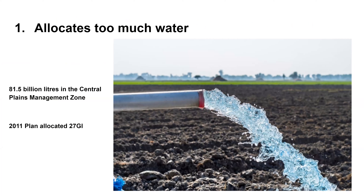The Water Act in the Northern Territory is extremely weak — it's highly discretionary and lacks clear direction on how we can sustainably manage water. 'Estimated sustainable yield' is not defined, so it doesn't have to meet certain parameters. In this region, 81.5 billion litres of water is being allocated. The Singleton licence is one of the largest in Australia, and about half that volume — 40 gigalitres — will go to Singleton. That 40 gigalitres equals the drinking water supply of all of the Darwin region, about 140,000 people. This plan allocates twice that volume every year.